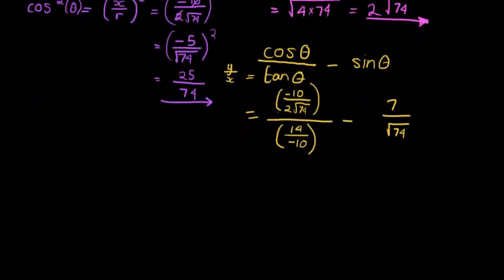We're dividing a fraction with a fraction, so we flip and multiply. The top one, negative 10 over 2 times square root of 74, simplifies to negative 5 over square root of 74. The bottom one we flip and multiply, so multiply with negative 10 over 14.